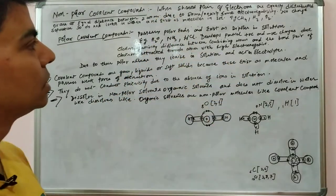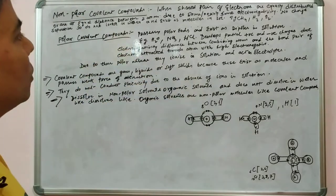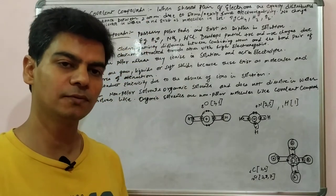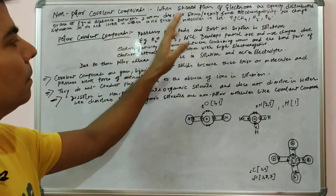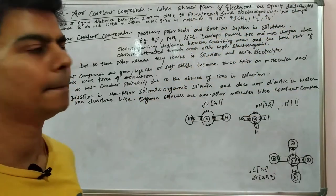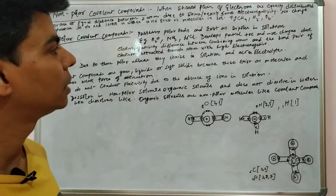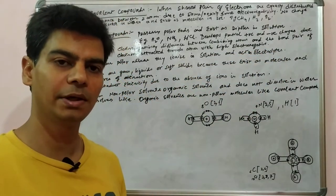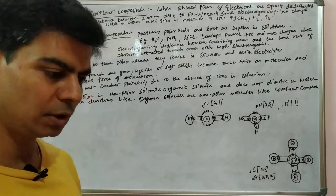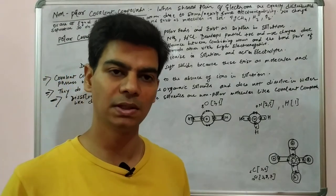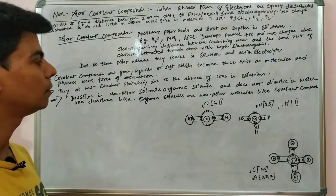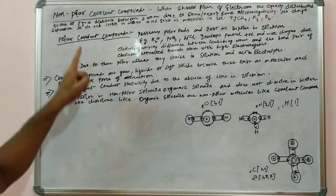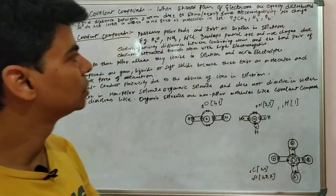In non-polar covalent compounds, the shared pair of electrons is equally distributed — at equal distance between two atoms — because of the same or nearly same electronegativity of the combining atoms. This is the case in methane, oxygen, nitrogen, and hydrogen. There is no charge separation, so they do not ionize in water. In polar covalent compounds, the atom with high electronegativity pulls the shared pair towards itself, creating charge separation, but this does not happen in non-polar compounds. Non-polar compounds exist as molecules in solution; examples include methane, hydrogen, and oxygen.